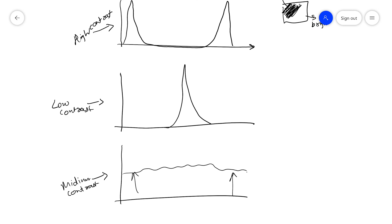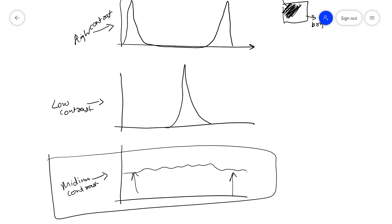Tonal contrast refers to the difference in light intensity across different regions of your image. Although important for all photos, tonal contrast is especially critical in black and white photos, where light is the only way to separate regions — there's no color to help. Medium contrast means a wide range of tones distributed from pure black to pure white, while low contrast means all tones are located in just one chunk.